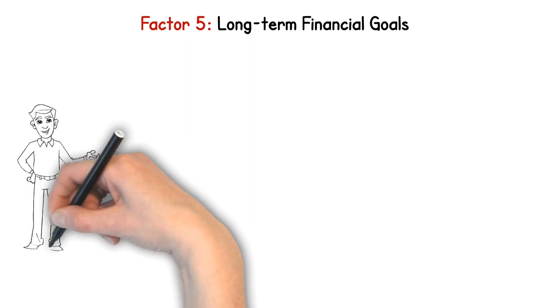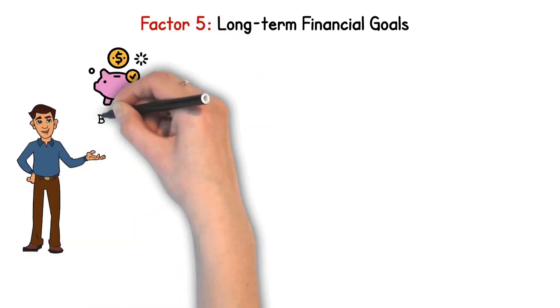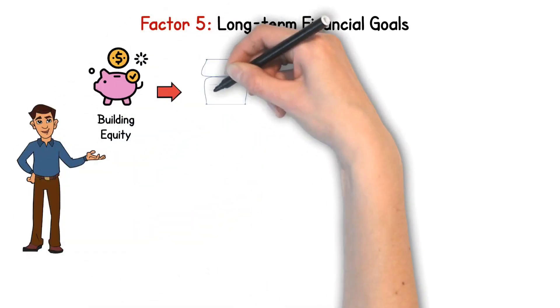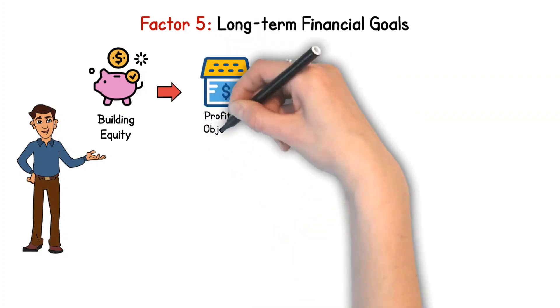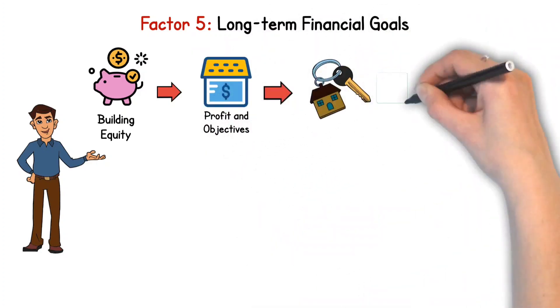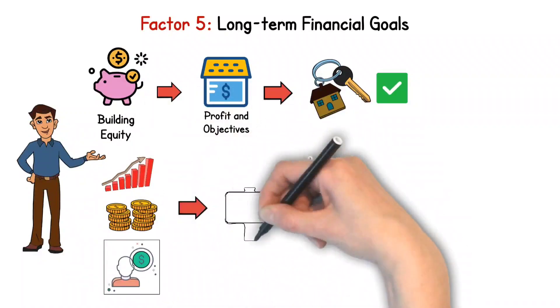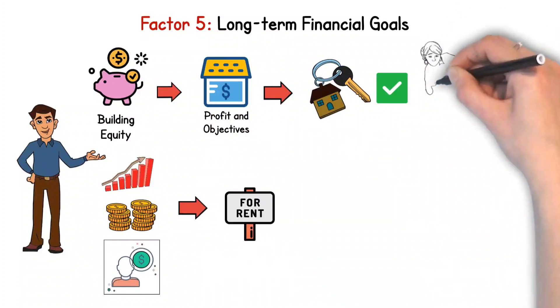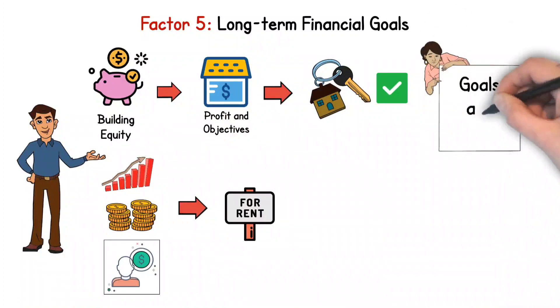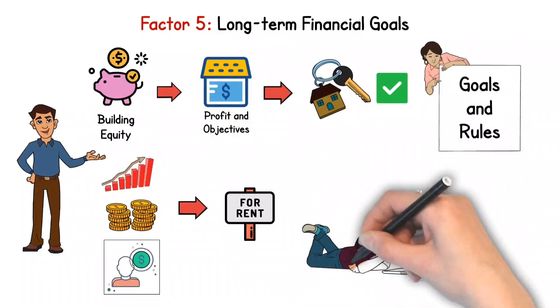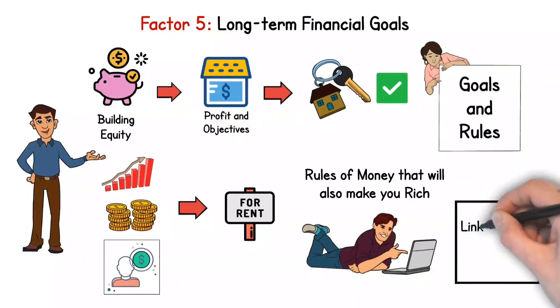Factor 5. Long-term Financial Goals. Consider your long-term financial goals. If building equity and potentially profiting from the sale of your home aligns with your objectives, buying might be the right choice for you. However, if you value investing your money elsewhere, like in stocks or starting a business, the lower initial cost of renting could serve you better. There are more goals and rules you should consider, and we have one video that can help you with that. Check out our video about the rules of money that will also make you rich. Link is in the description box.